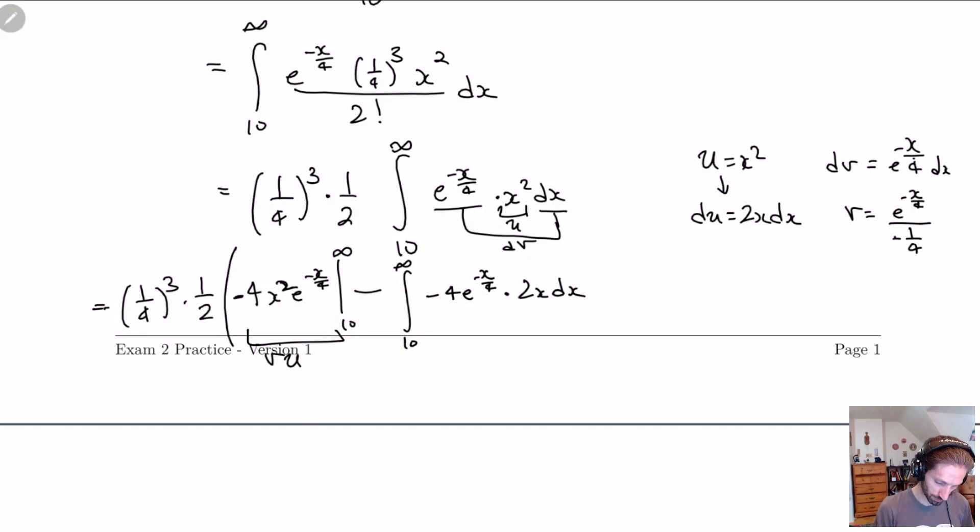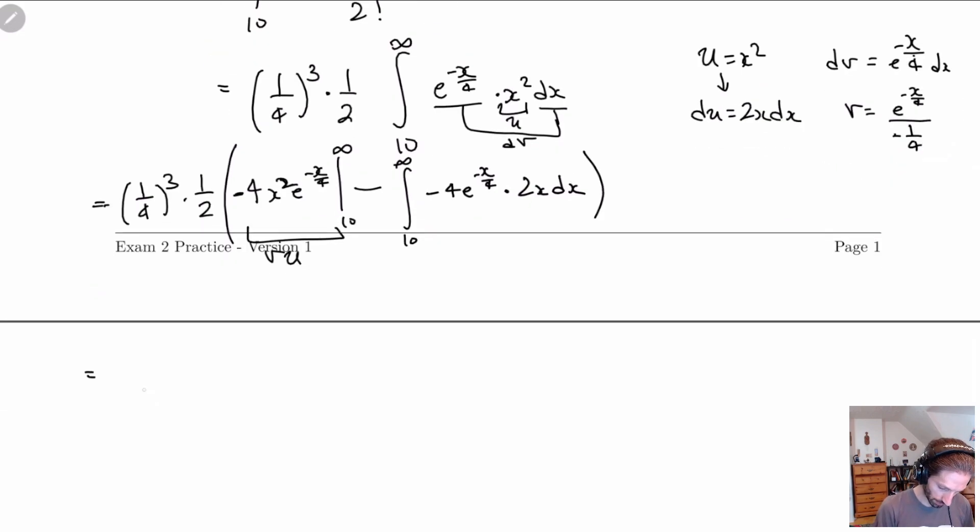So in other words, let me write this down again. I have 1 over 4 cubed times 2 times minus 4x squared e to the minus x over 4 from 10 to infinity minus the, or minus minus is plus 4 and 2, I can bring the 8 out, the integral of 10 to infinity of e to the minus x over 4, x dx. So basically I have to do integration by parts again.